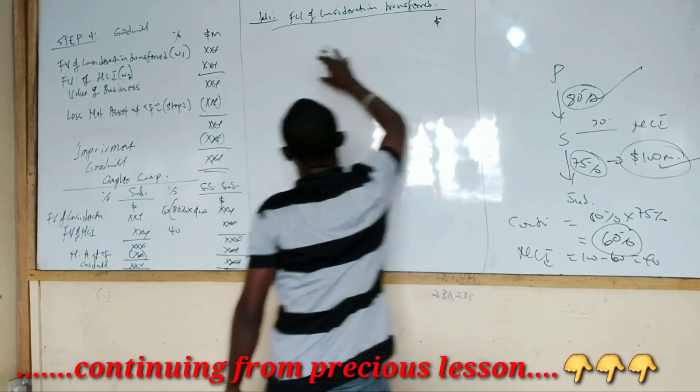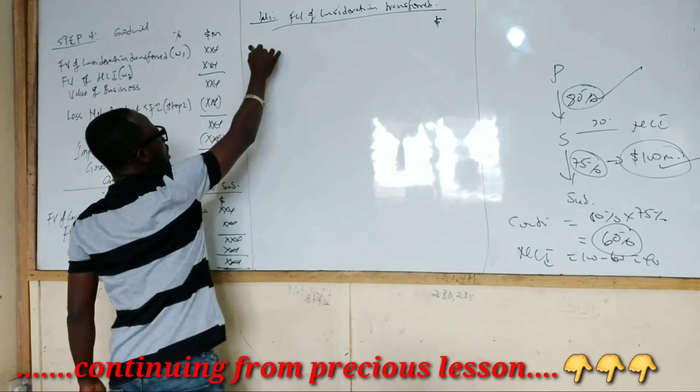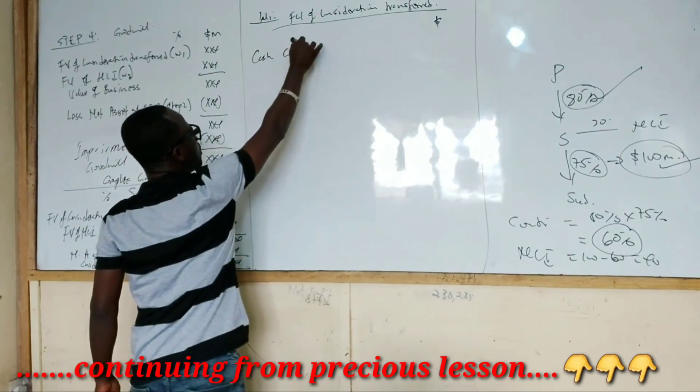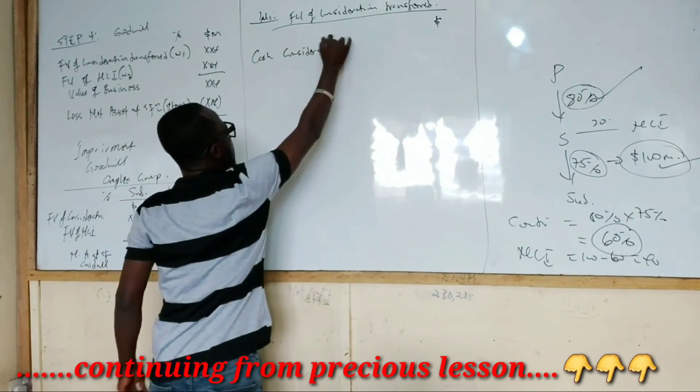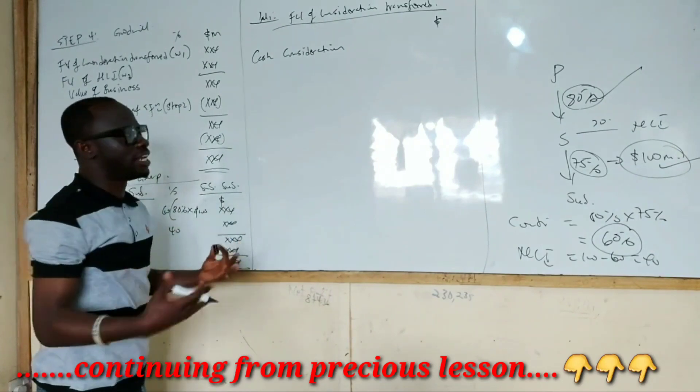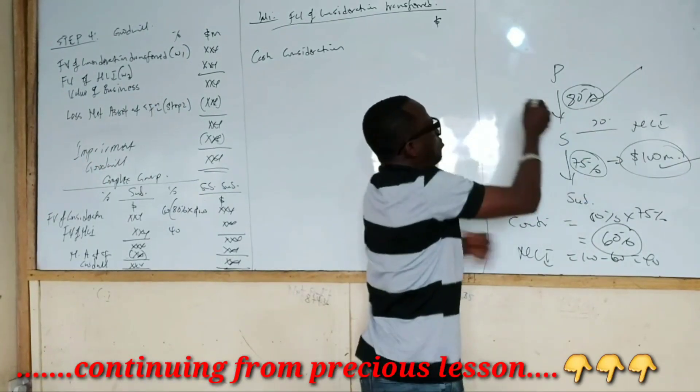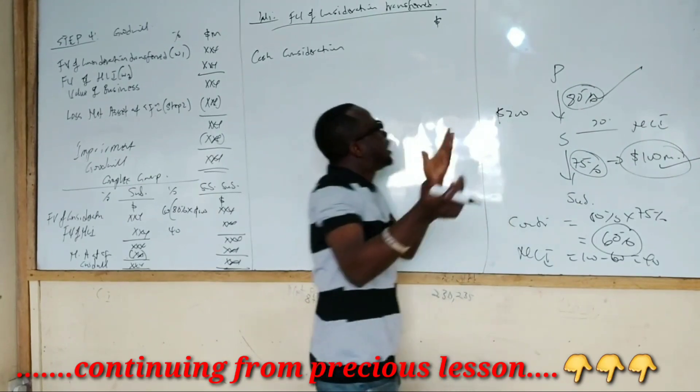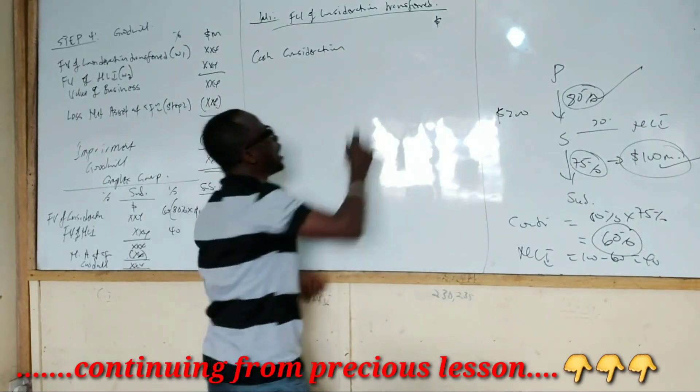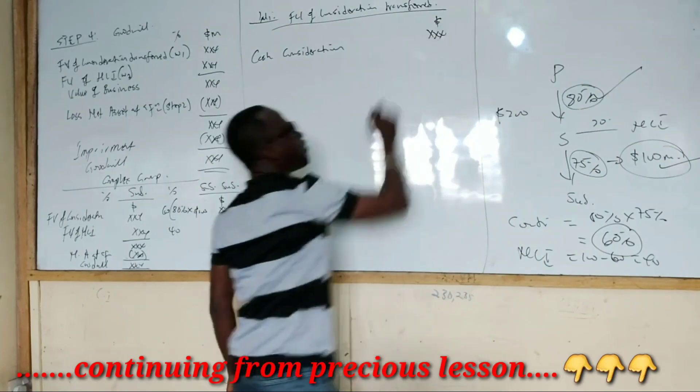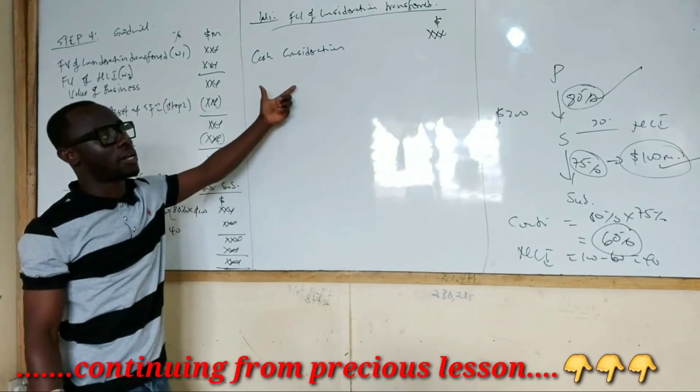The first component of fair value transfer is where the company does a cash consideration. This one, you don't have to think about it. It says they acquire 80% of the shares paying $200 million. That is cash consideration. So that is the first component of the fair value of consideration transfer.